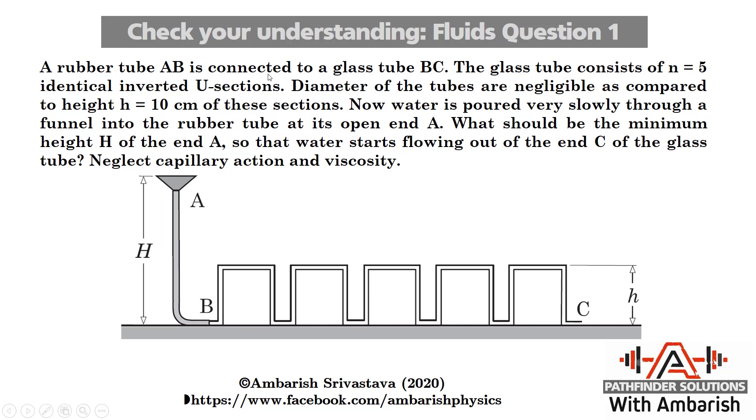A rubber tube AB is connected to a glass tube BC. The glass tube consists of n equals 5 identical inverted U sections. Diameter of the tubes are negligible as compared to height H equals 10 cm of these sections. Now water is poured very slowly through a funnel into the rubber tube at its open end A. What should be the minimum height capital H of the end A so that water starts flowing out of the end C of the glass tube? Neglect capillary action and viscosity.